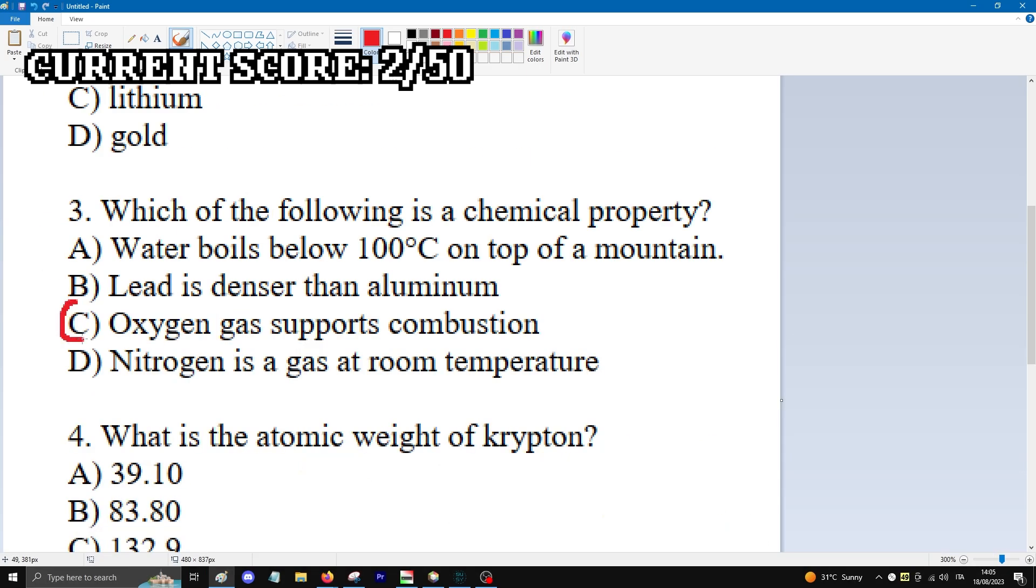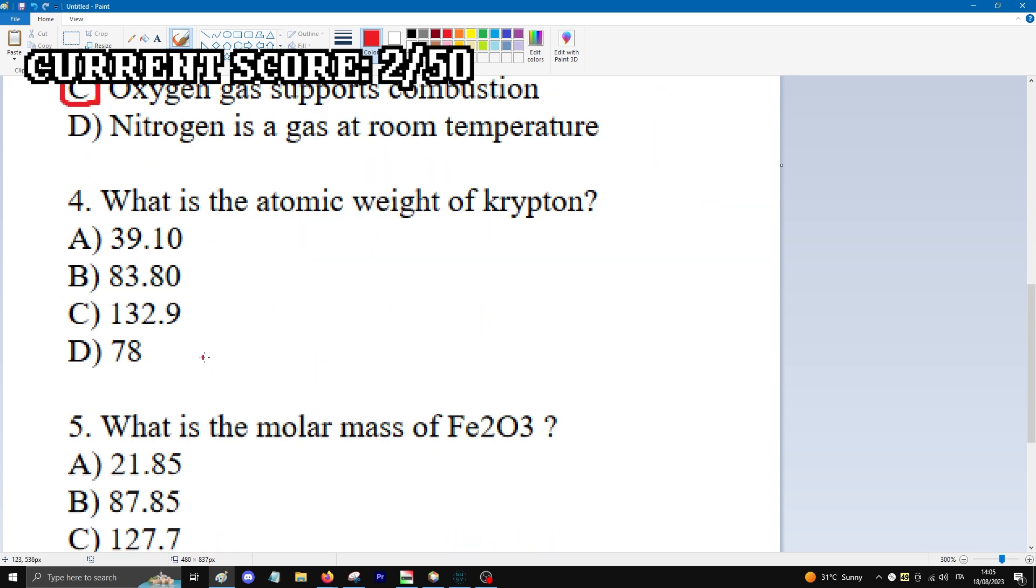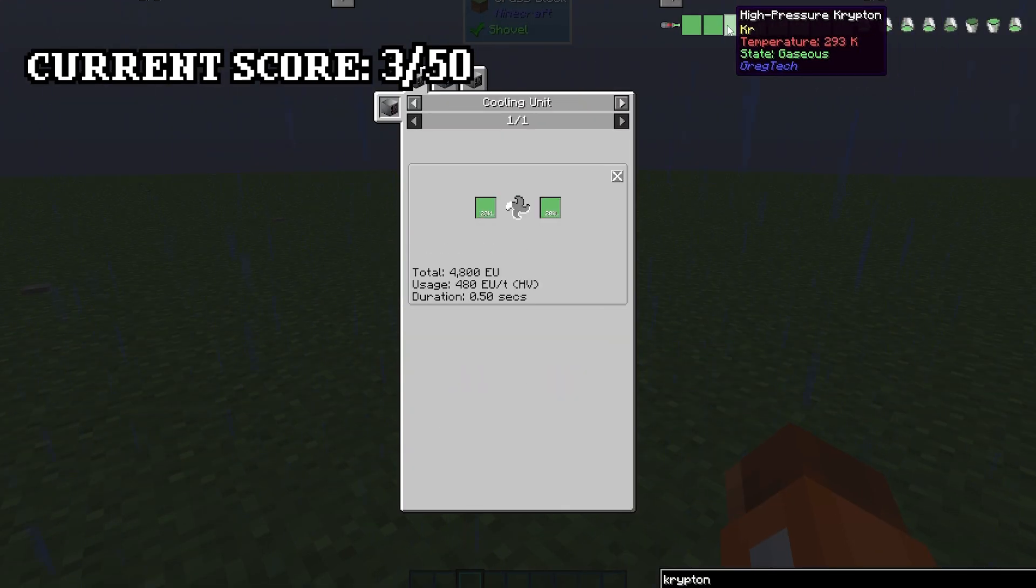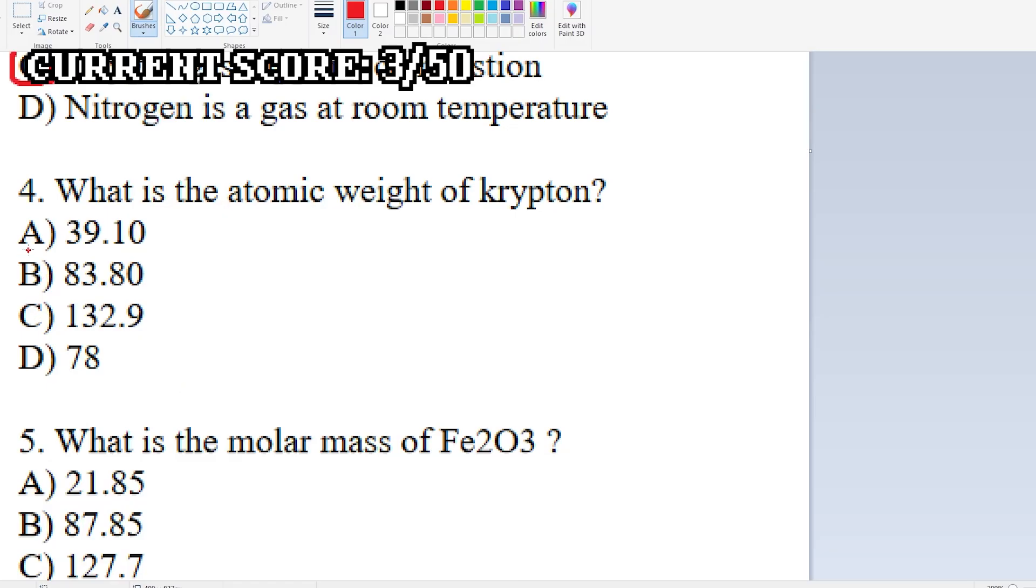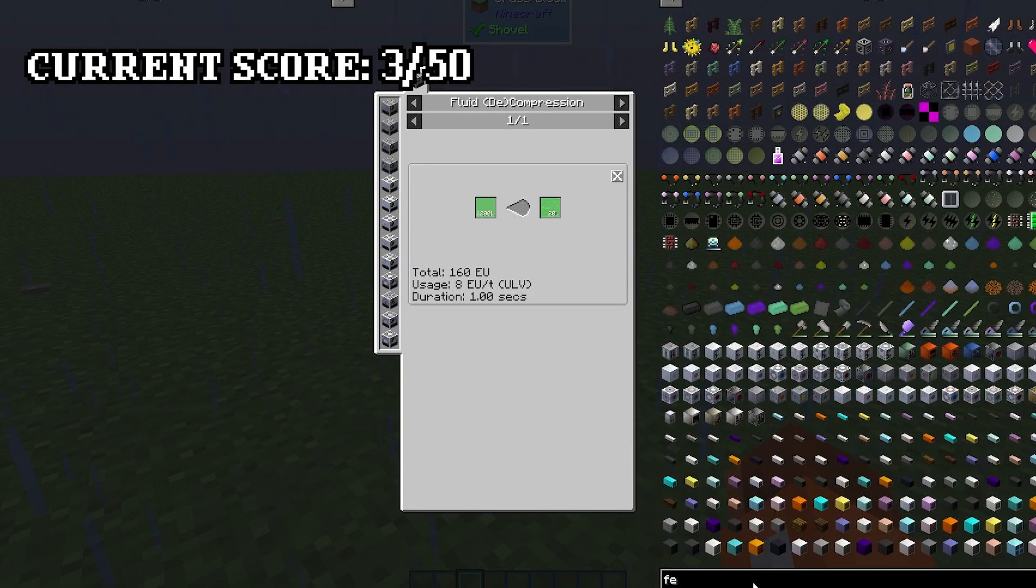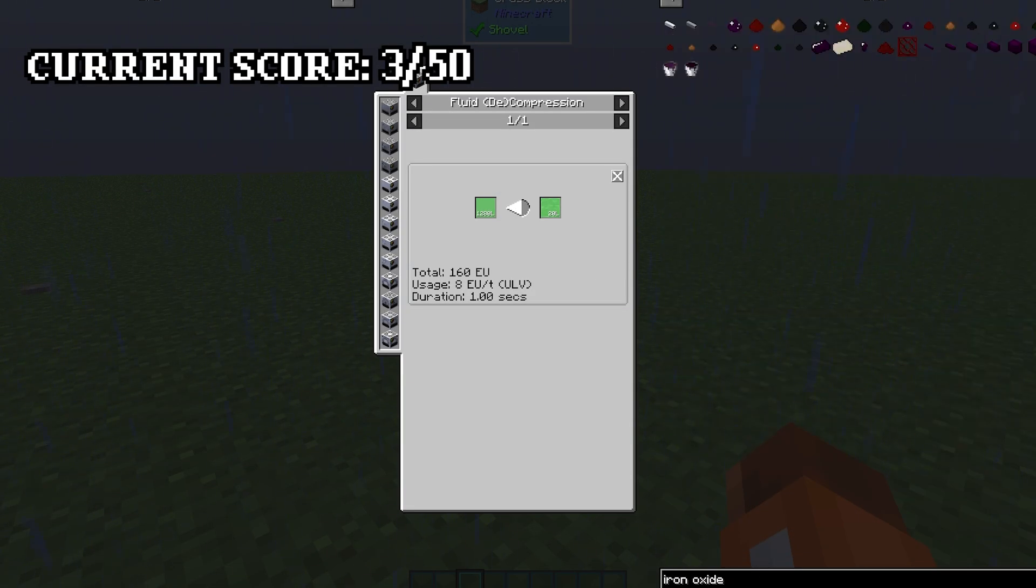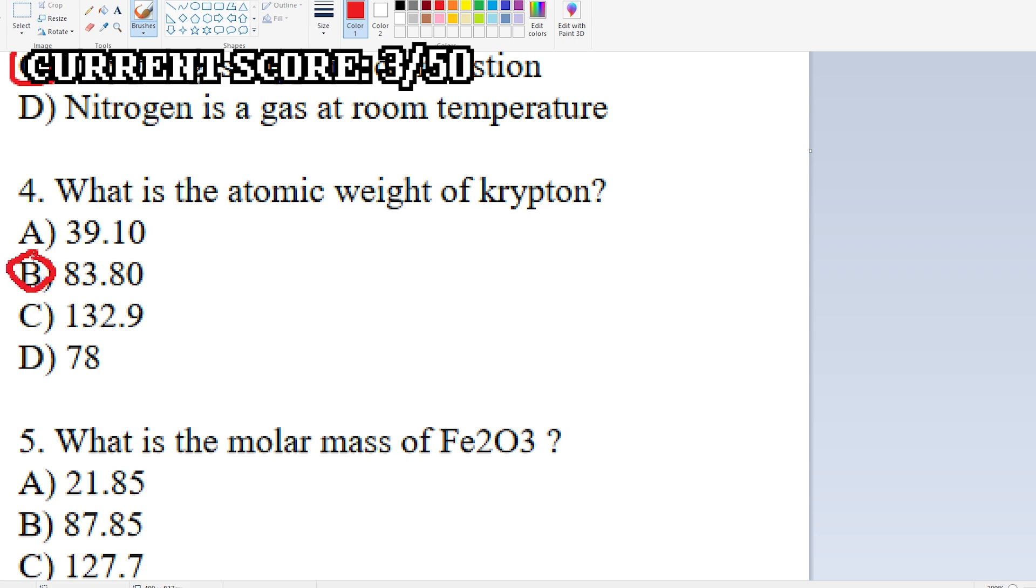Question 3 was chosen randomly. The answer is very obviously C. For question 4, I had to choose the atomic weight of krypton. For some reason, this element does not show up in JEI, so I used Google, which is basically the same thing.